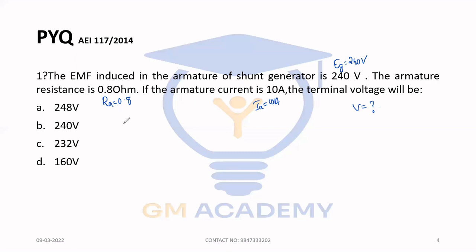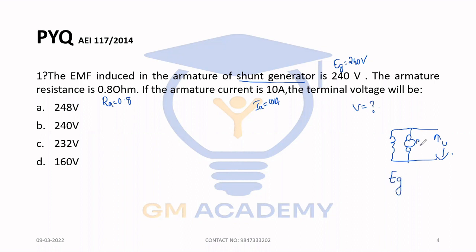The equation is: EG = V + IA × R, so V = EG − IA × R. The EMF is 240, minus IA which is 10A, into R which is 0.8 ohm.